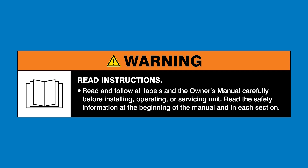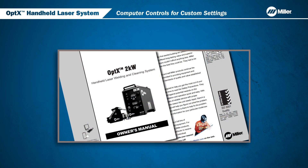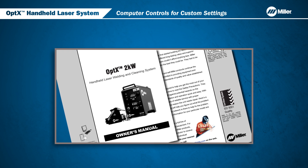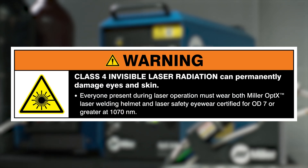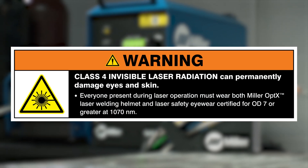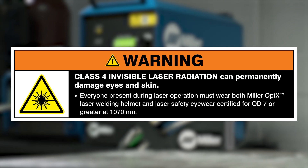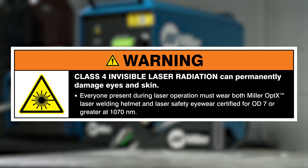Read and follow all labels and the Owner's Manual. In this video, we will cover customizing mode settings with computer control for the Optics handheld laser system. All users must review the Owner's Manual in its entirety and be fully trained before using the Optics system. Class 4 invisible laser radiation can permanently damage eyes and skin. Everyone present during laser operation must wear both the Miller Optics laser welding helmet and laser safety eyewear certified for OD7 or greater at 1070 nanometers.